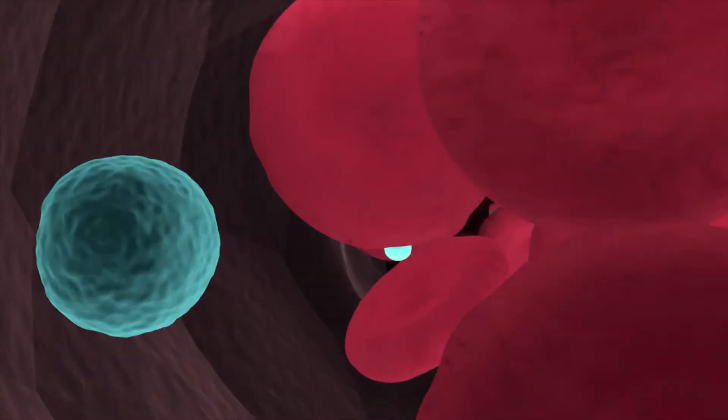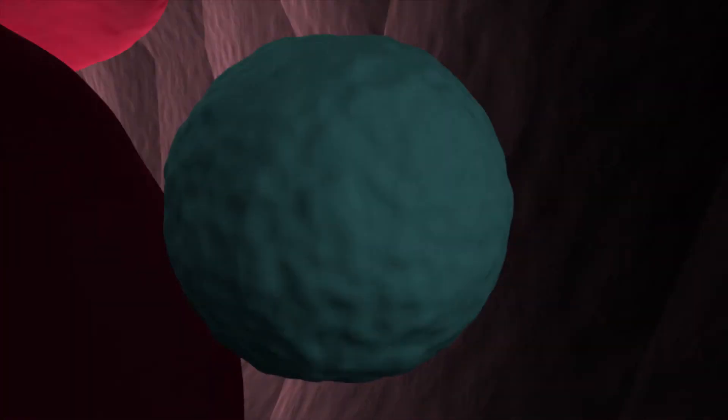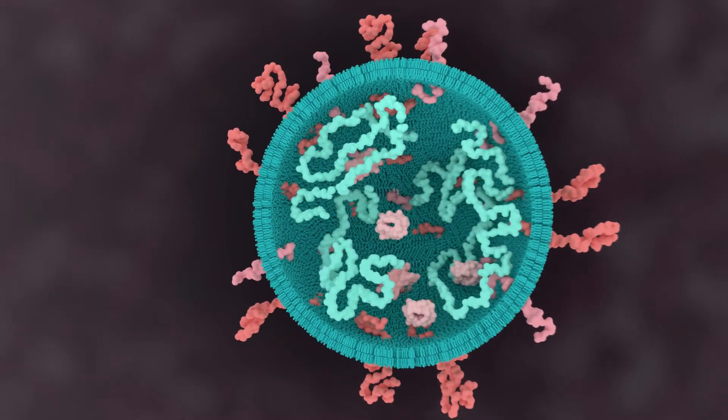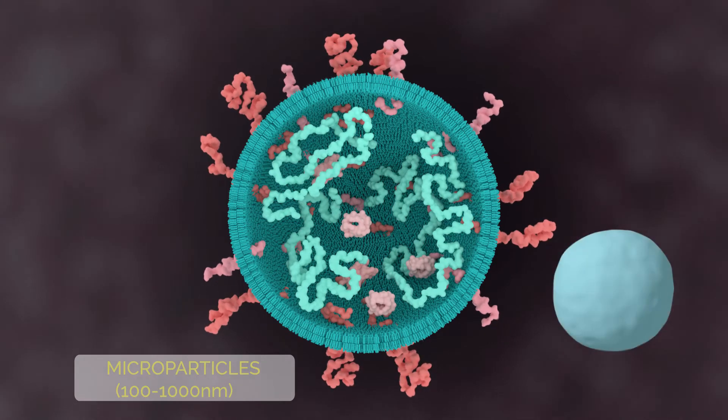The blood in our bodies consists of red and white blood cells, plasma, and a multitude of proteins. Traveling with them are microvesicles, classified as either microparticles or their smaller counterpart, exosomes.